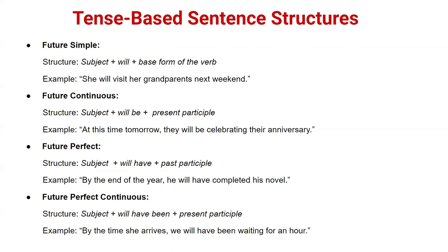Future simple: the structure is subject + will + base form of the verb (first form). For example: 'She will visit her grandparents next weekend.' Previously 'shall' was also used as a modal verb, but in modern English you can simply use 'will' — the meaning is exactly the same. 'Shall' is rarely used today.